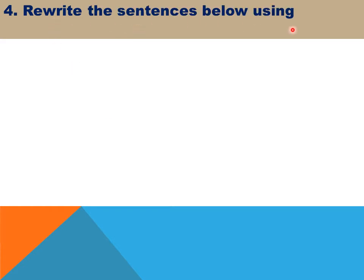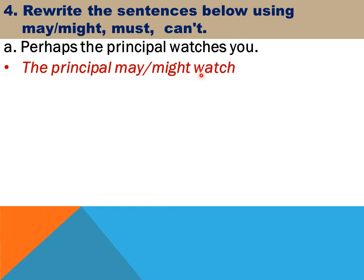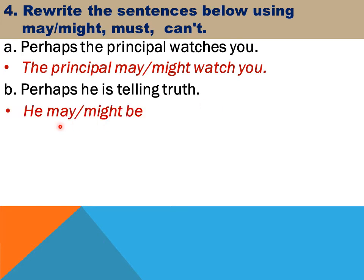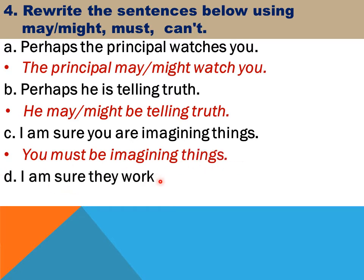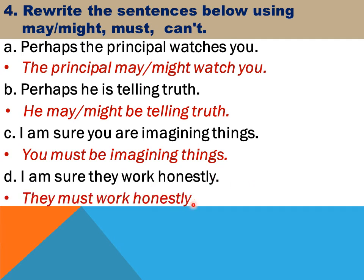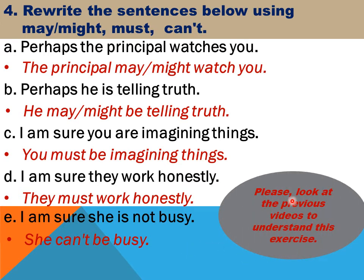Question 4: rewrite the sentences using may, might, must, or can't. A — 'Perhaps the principal watches you' becomes 'The principal may/might watch you.' B — 'Perhaps he is telling the truth' becomes 'He may/might be telling the truth.' C — 'I am sure you are imagining things' becomes 'You must be imagining things.' D — 'I am sure they work honestly' becomes 'They must work honestly.' E — 'I am sure she is not busy' becomes 'She can't be busy.'